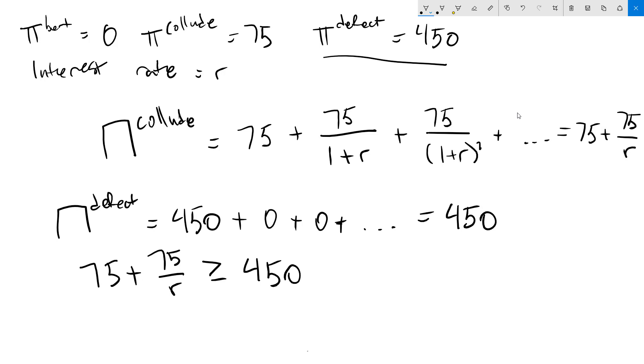This means that by playing Grim Trigger, you cannot improve your payoff by defecting. Subtract 75 from both sides. We get 375. Now solve for R. We get R less than or equal to 75 over 375, which is R less than or equal to 0.2, which is 20%.